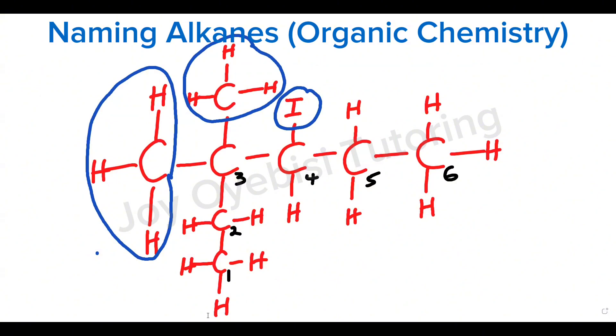Now name the substituents. A one carbon substituent is known as methyl group. This is also methyl group. Now iodine as a substituent is going to be called iodo.